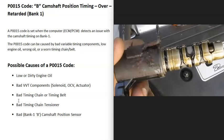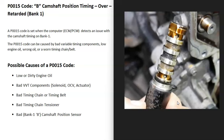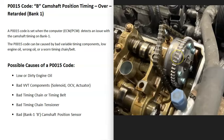A very common cause of this code is some kind of issue with the variable valve timing components — things like the solenoid, the oil control valve, or the actuator attached to the cam, sometimes called the phaser. These variable valve timing components can adjust the timing depending on what's going on with the engine. Oil flows through all these components, which is why low or dirty oil can affect them. The most common failure is the solenoid, which can go bad or become clogged from old oil. There's also an oil control valve that controls oil flow through the system.